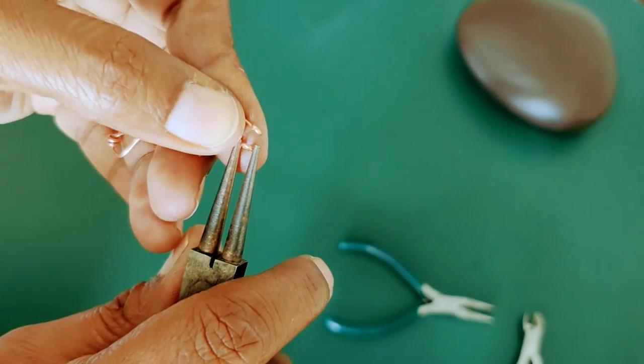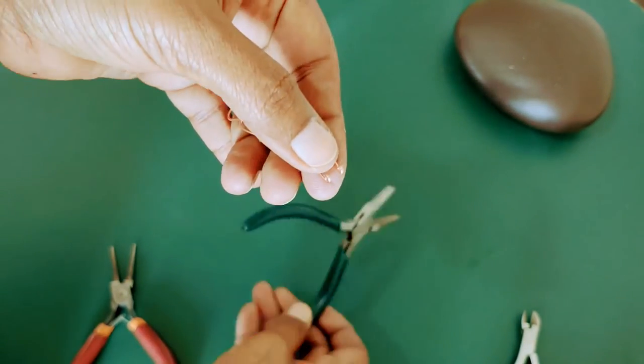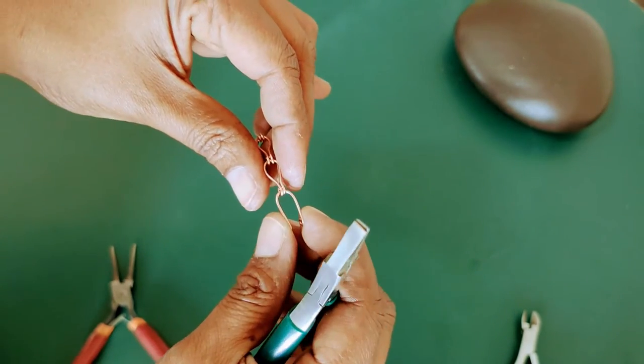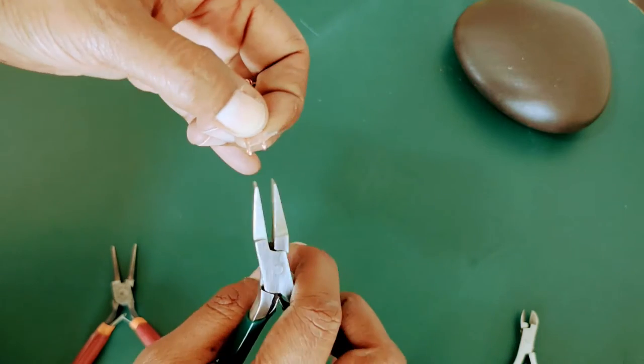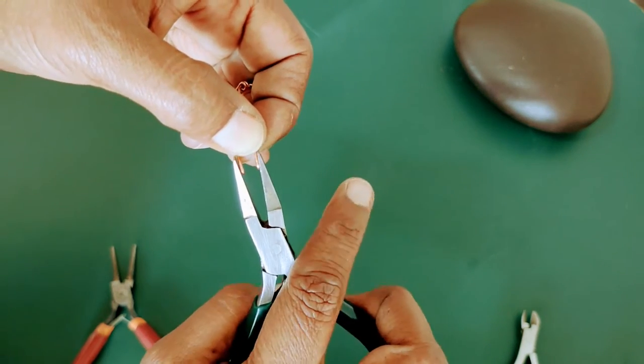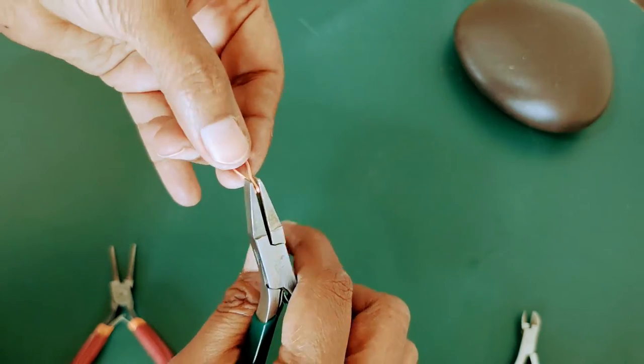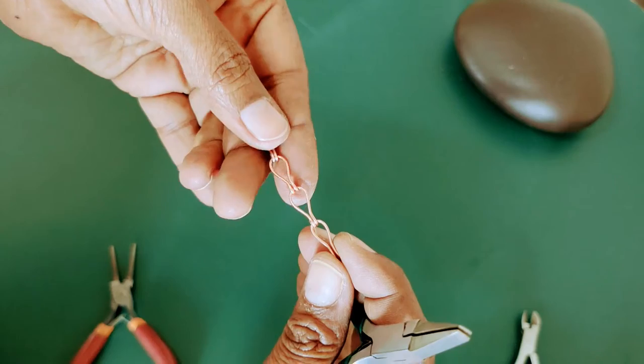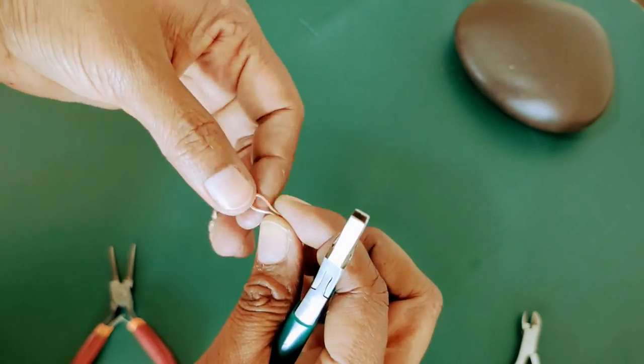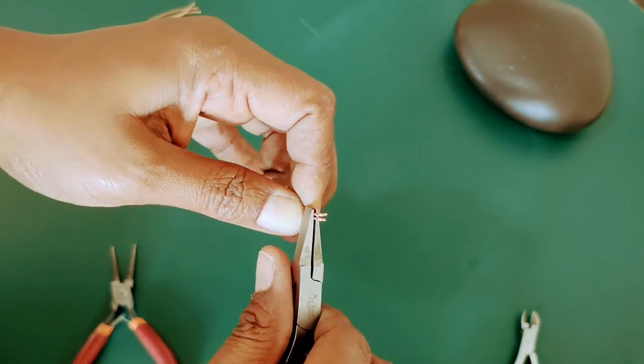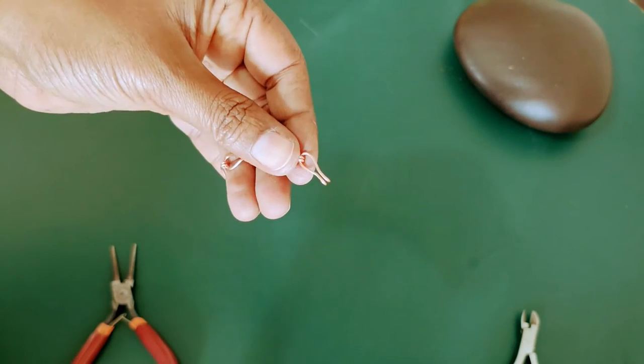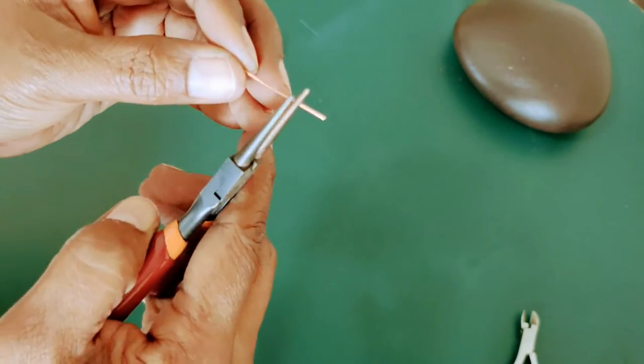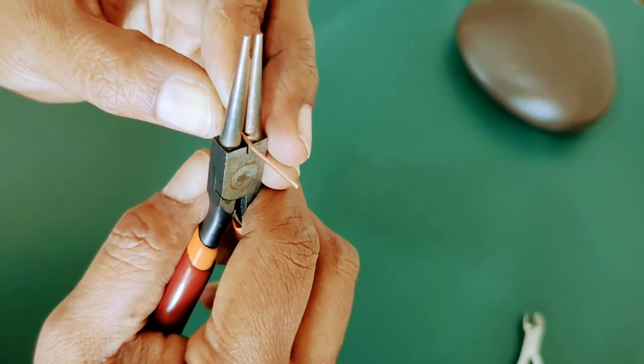Once you've got it like this, bring these two close together and hold it, that's it. I'll show you once more. It's very easy. The first one that you need to make is like this. You can use this plier just to get it right in between.